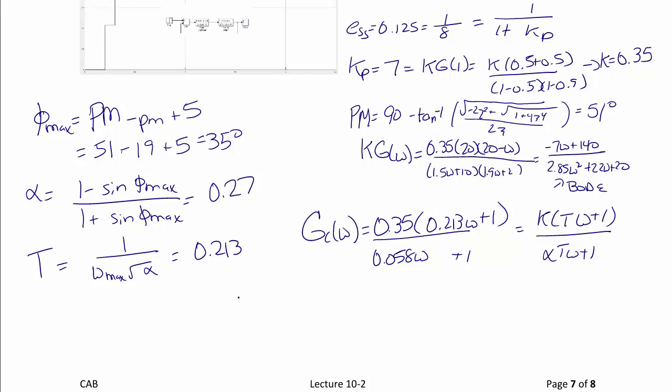The last step we do is another bilinear transformation to convert this back to the Z domain. So Gc(z) equals Gc(omega), where omega is equal to 2 over T times z minus 1 over z plus 1, which equals 0.896 times z minus 0.621 over z minus 0.074.